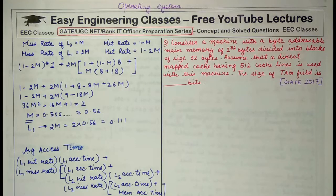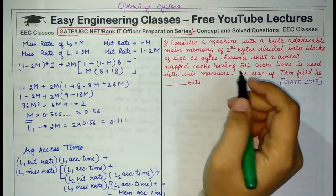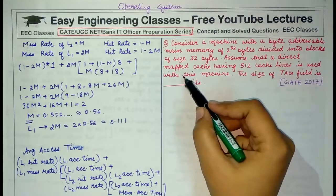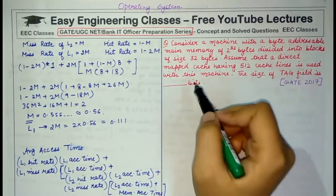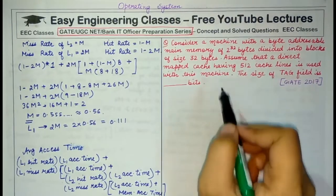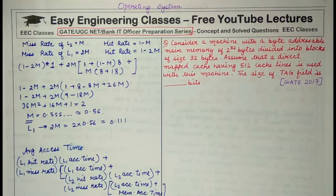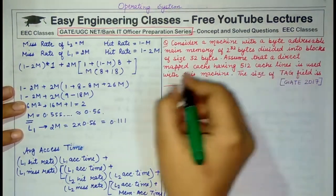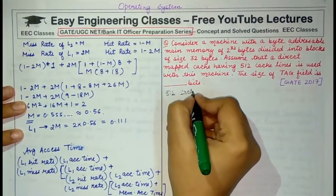The next question: consider a machine with a byte-addressable main memory of 2^32 bytes, divided into blocks of size 32 bytes. Assume a direct-mapped cache having 512 cache lines is used. The size of the tag field in bits is to be found. The cache has 512 cache lines, which equals 2^9 lines.